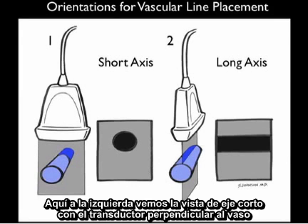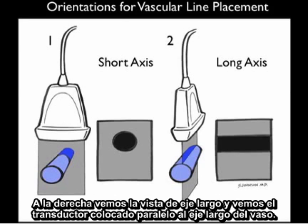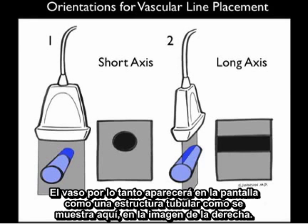Here to the left, we see the short axis configuration with the probe perpendicular to the vessel, and notice that the vessel will appear on the ultrasound screen as a circle, as the vessel will be cut end on. To the right, we see the long axis configuration — note the probe placed along the long axis course of the vessel. The vessel on the screen will therefore appear as a tubular structure as shown in the image to the right.